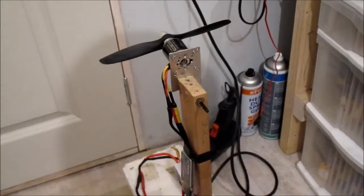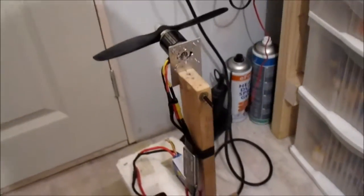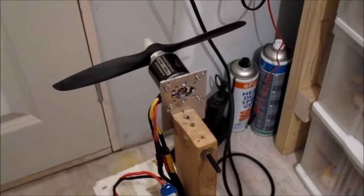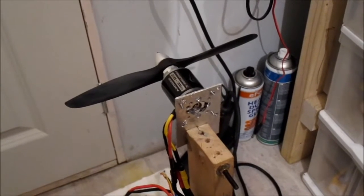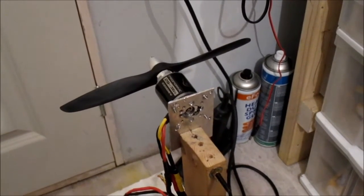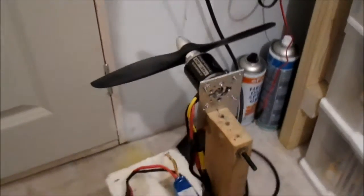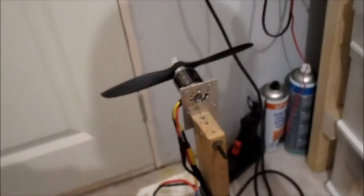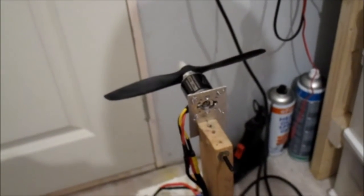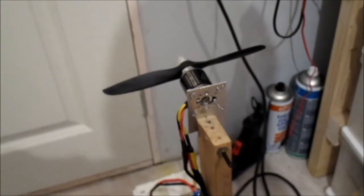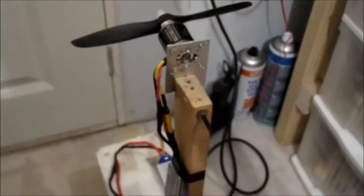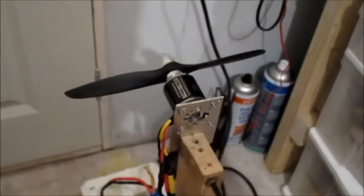Right, this next prop is still a seven by five, but it's a JXF gas prop, so it's meant for petrol engines. I found sometimes if you've got a reasonably powerful motor, it's sometimes better to use a gas prop. I think the electric props sort of think they're going to be running not very much power, so they're thinner and lighter, and sometimes that causes them to warp. But these are gas props, so let's see what we get on the thrust on that. Still a seven by five, I've charged up the battery.